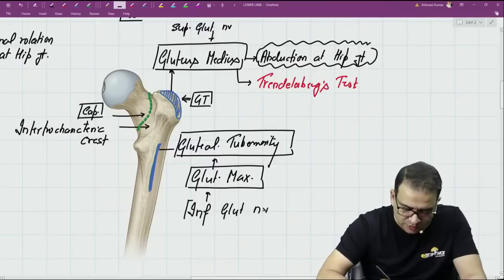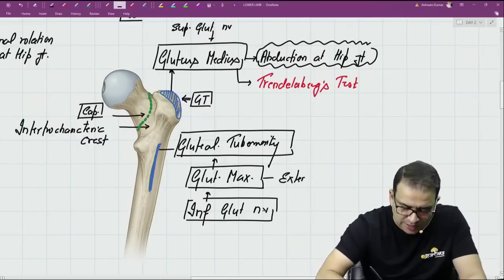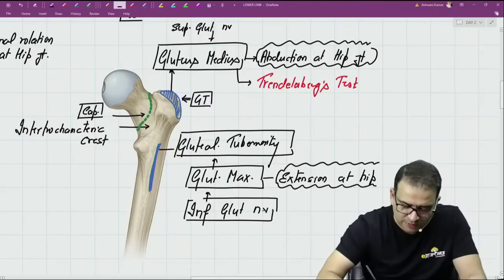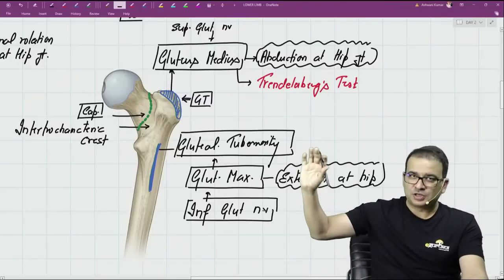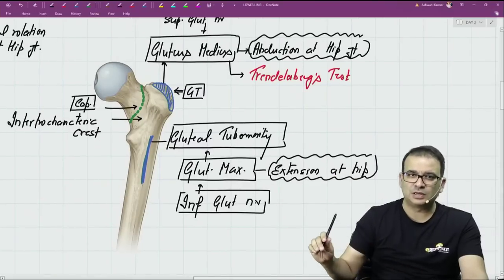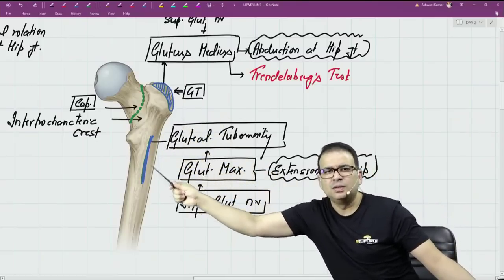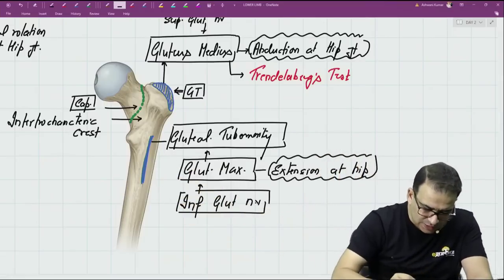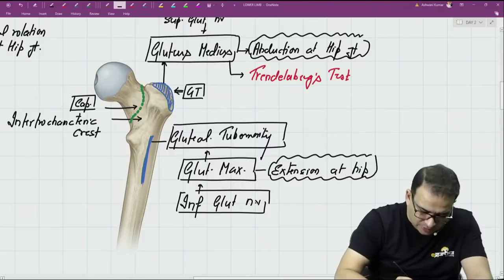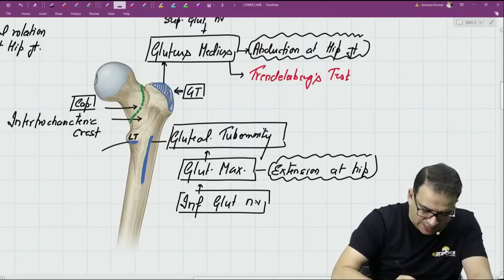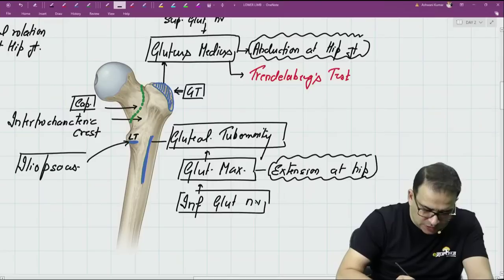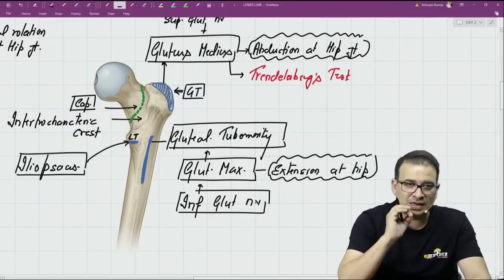Gluteus maximus is supplied by the inferior gluteal nerve, and its function is extension at the hip joint. So in a greater trochanter fracture, gluteus maximus is spared because it attaches to the gluteal tuberosity below the greater trochanter on the posterior aspect. The lesser trochanter provides insertion for the iliopsoas — the iliacus and psoas major together form a common tendon, the iliopsoas tendon, which inserts into the lesser trochanter.